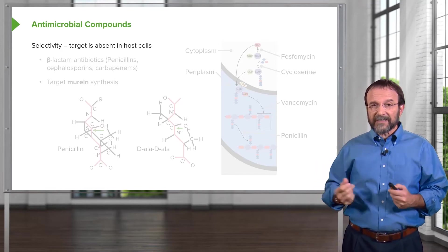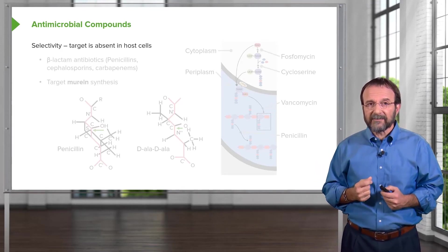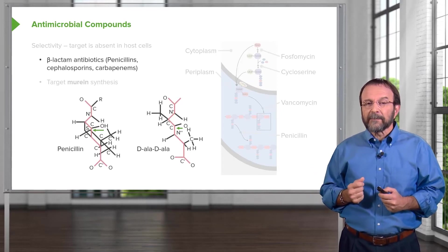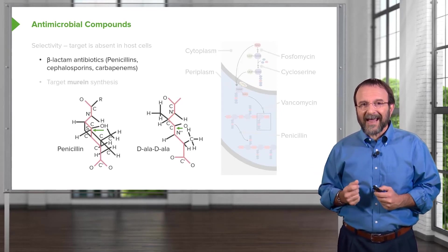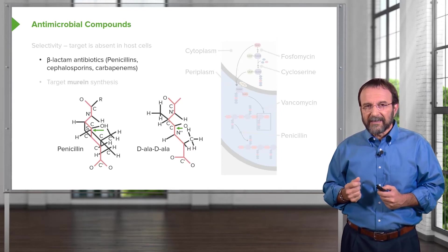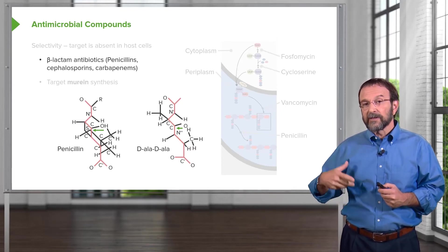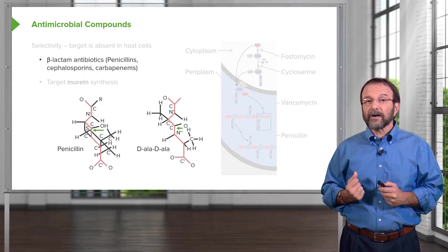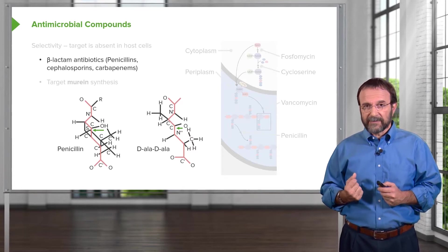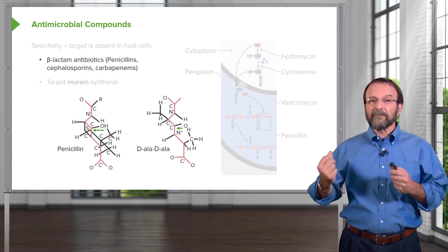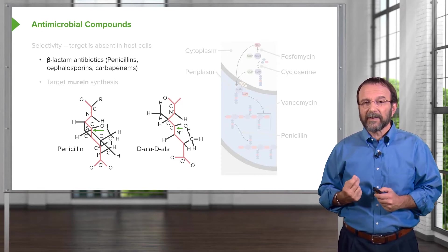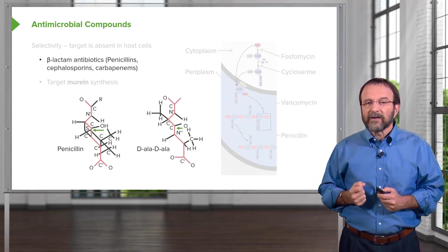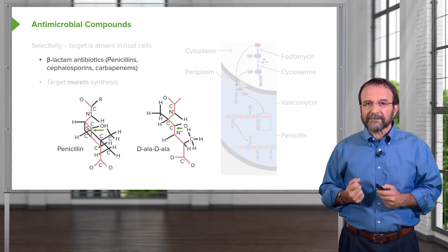I'll give you an example of such selectivity. There is a class of antibiotics called the beta-lactam antibiotics, and these include the penicillins, the cephalosporins, and the carbapenems. They're called beta-lactam antibiotics because they have a chemical ring in them called the beta-lactam ring.